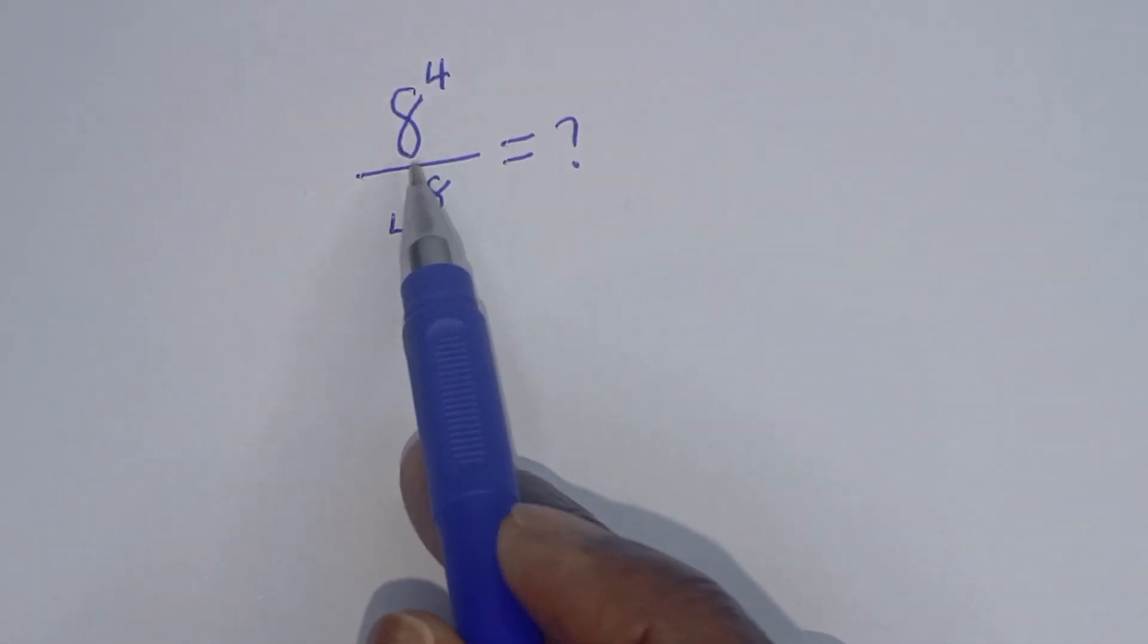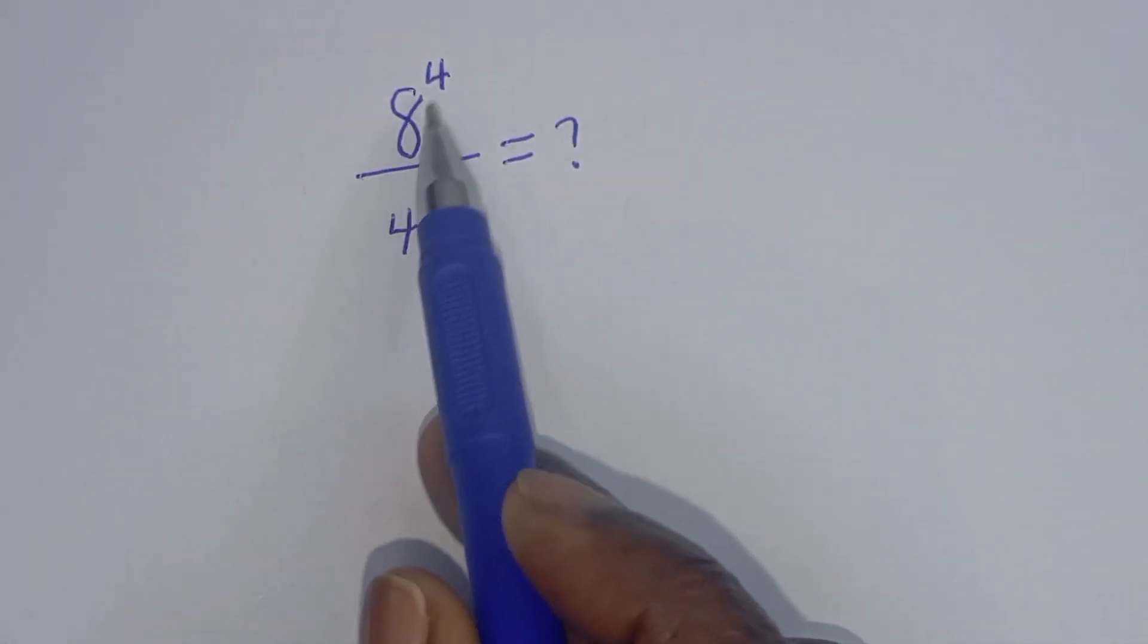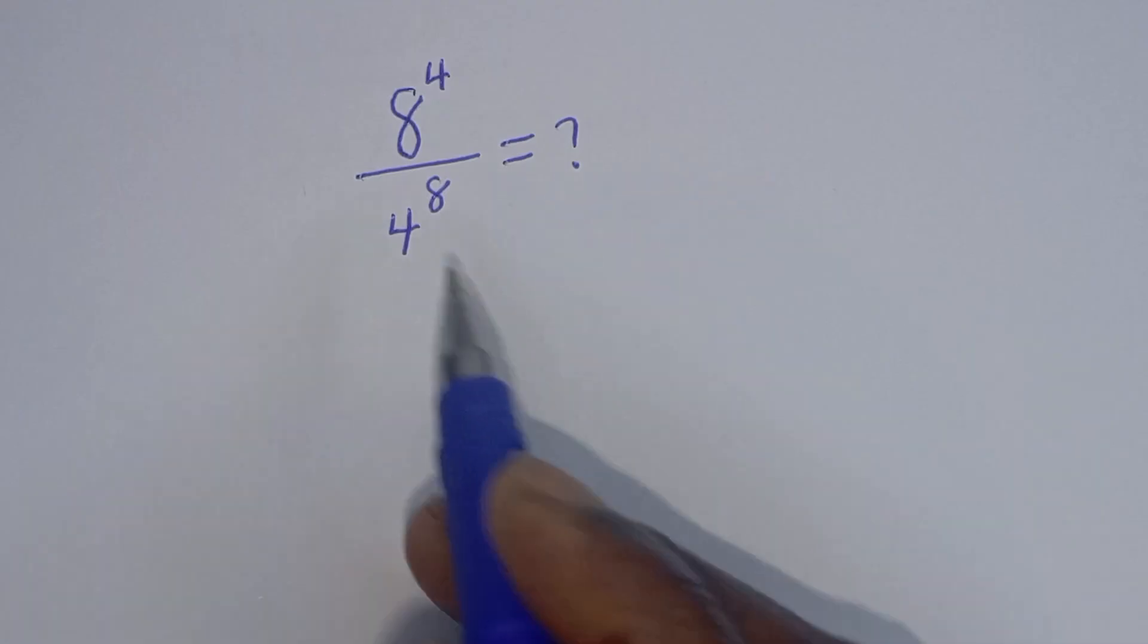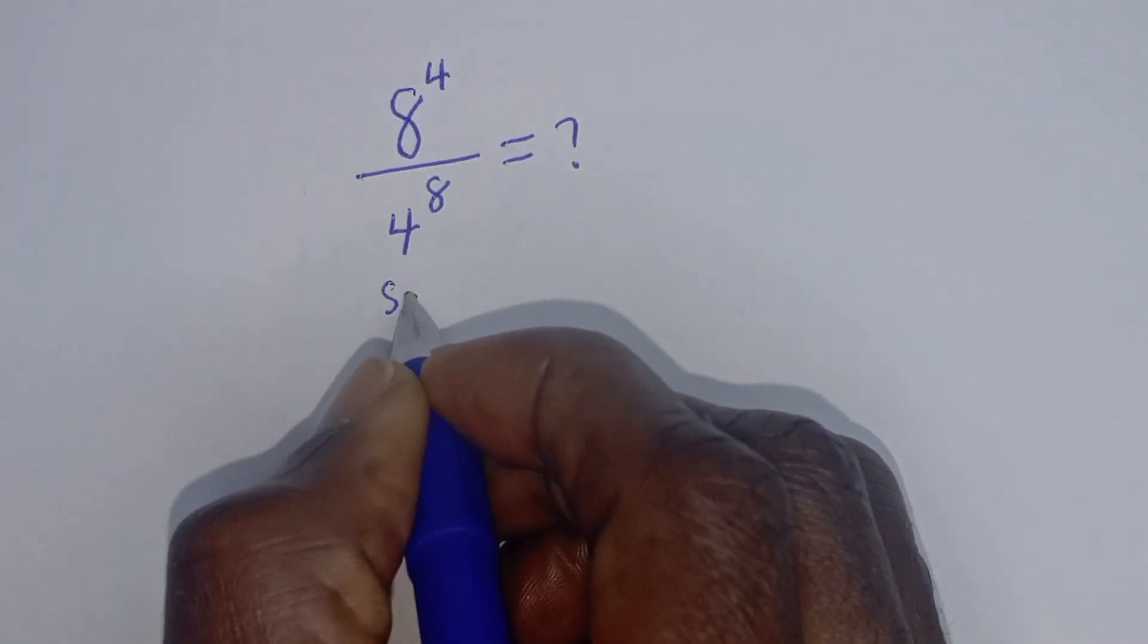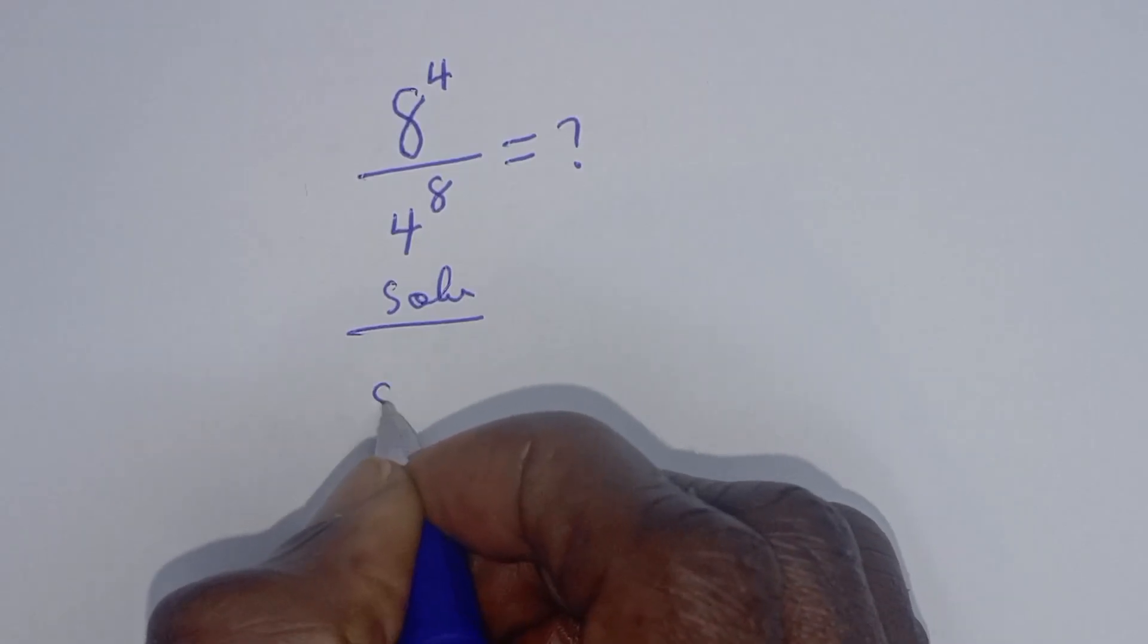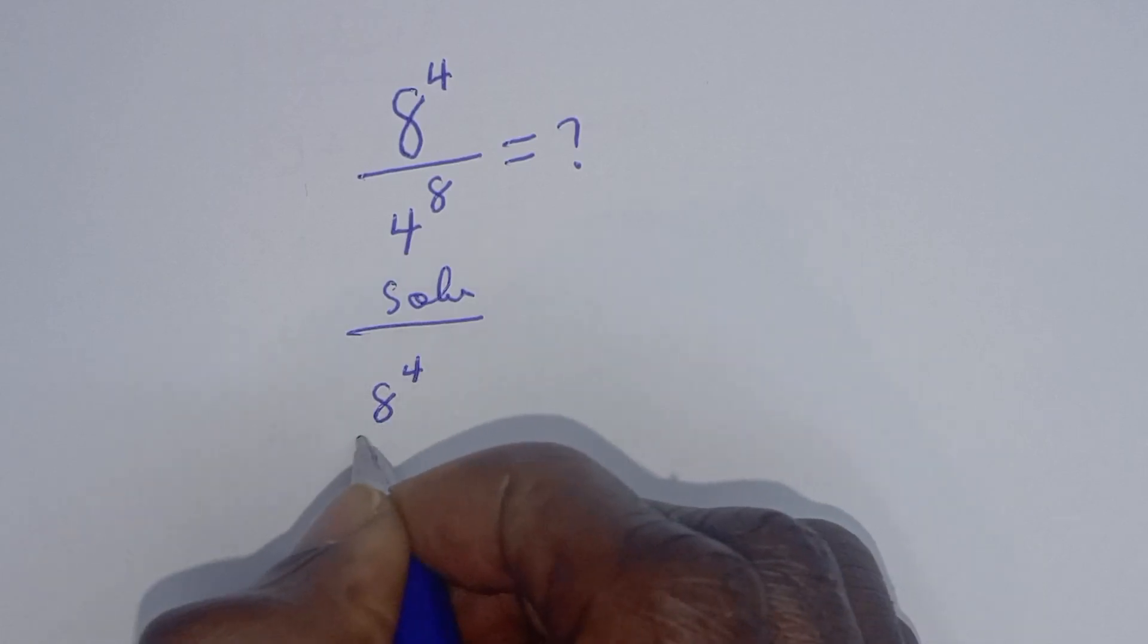Hello, how to simplify this nice math problem without using a calculator: 8 raised to power 4 divided by 4 to the power of 8. Solution: now 8 raised to power 4 over 4 to the power of 8.